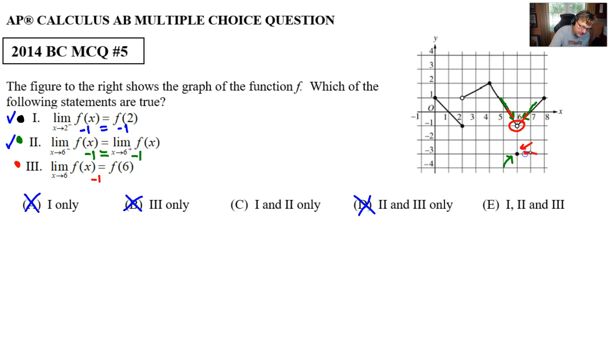If we look at f(6) right here, we see that -3 is its result because that is the point that is defined there. Of course, -1 is not equal to -3. For that reason, Roman numeral III is not true, and that means we're going to eliminate choice E. That leads us to our correct answer.